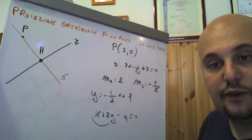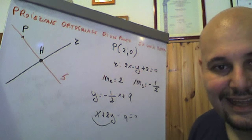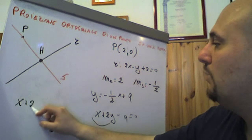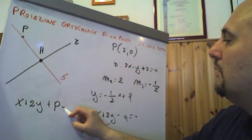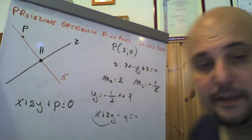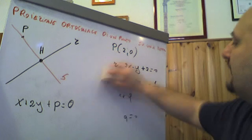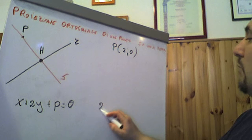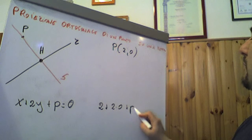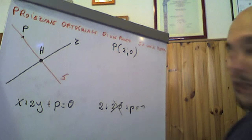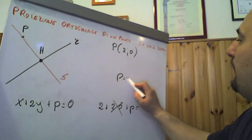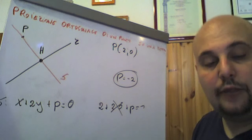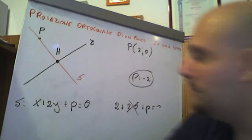Ecco come sarà l'equazione del fascio improprio. Quindi, 2x - y + 2 = 0 è la retta R. La retta S, una retta perpendicolare appartenente al fascio improprio, avrà l'equazione x + 2y + P = 0. Per determinare P, basterà imporre il passaggio del punto P di coordinate (2, 0): 2 + 2·0 + P = 0, quindi P = -2. L'equazione della retta S sarà dunque x + 2y - 2 = 0.